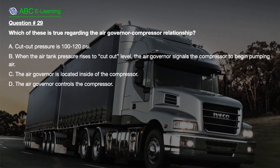Question number 29. Which of these is true regarding the air governor compressor relationship? A. Cutout pressure is 100-120 PSI. B. When the air tank pressure rises to cutout level, the air governor signals a compressor to begin pumping air. C. The air governor is located inside of the compressor. D. The air governor controls the compressor.